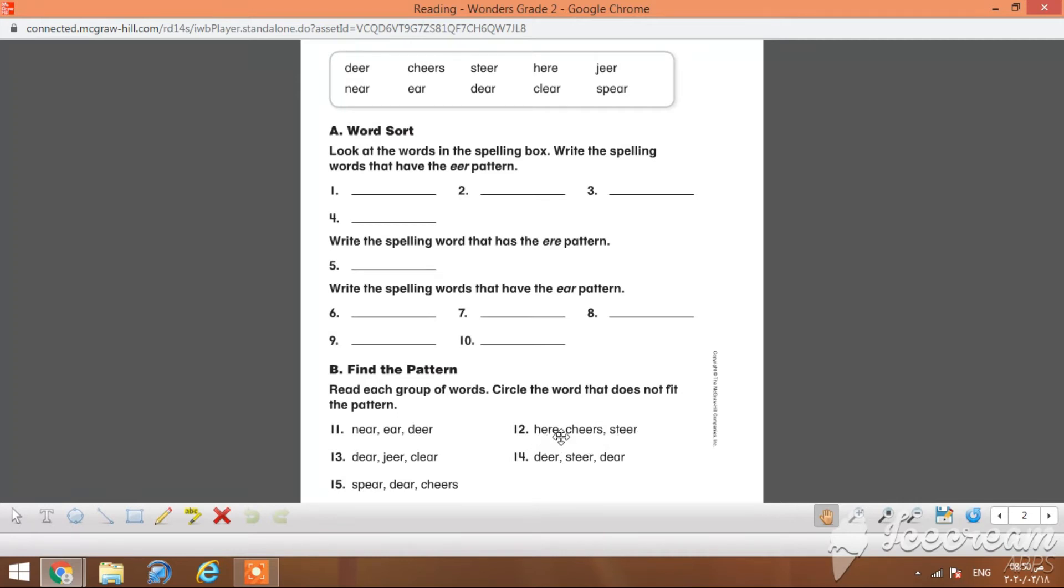Number 13: deer, zero, clear. Of course, the second one has a different pattern. Number 14: deer, steer, deer, deer. Double-E-R, double-E-R, and E-A-R pattern. Ear is a different pattern. Last one: spear, spear, deer, cheers. Of course, spear and deer have the same pattern, while cheers has a different one, so circle cheers.